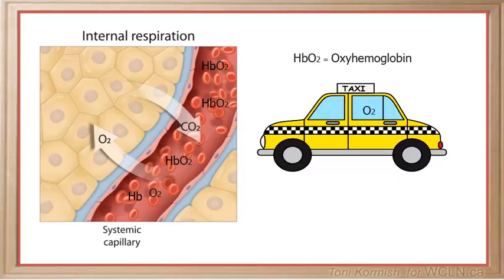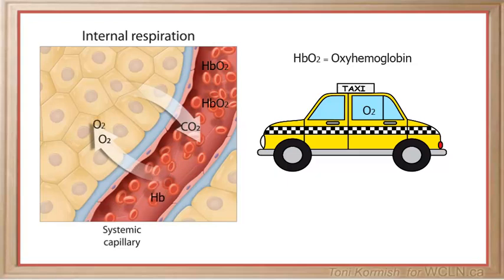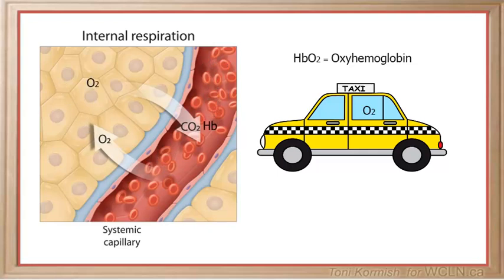First, oxygen has been carried to the tissues of the body in the form of oxyhemoglobin, which breaks down to release the oxygen molecules from the hemoglobin molecule. Oxygen is now free to diffuse across the cell membrane into the cells of the body to provide them with oxygen.